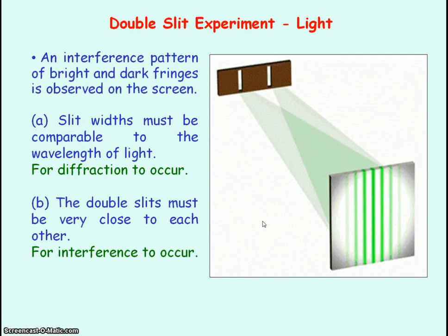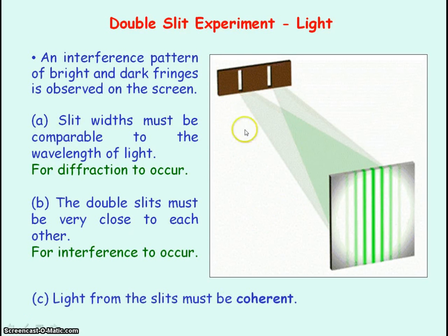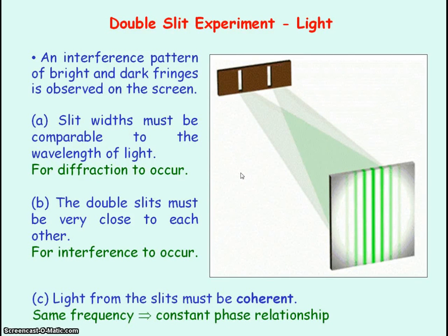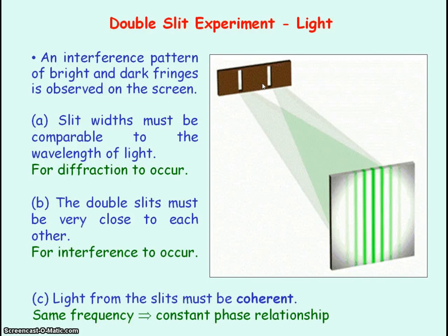The final condition needed is that the light from the slits is coherent, meaning that the light passing through both slits has the same frequency, so that there is a constant phase relationship between the light from the two slits. A constant phase relationship means that the phase difference between the light waves from the slits is fixed — for example, they're both in phase or both in antiphase, but it is a fixed phase difference between them.